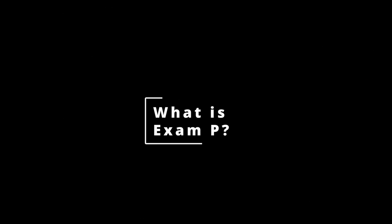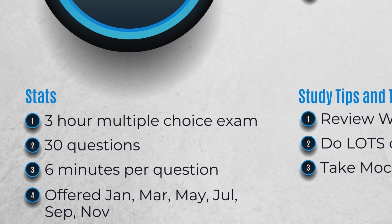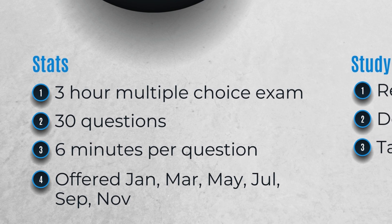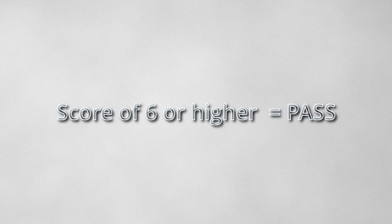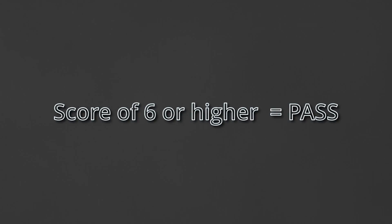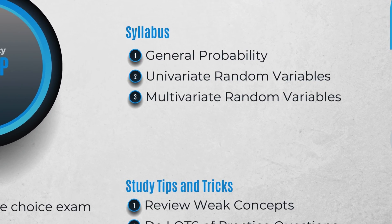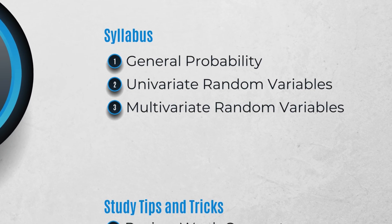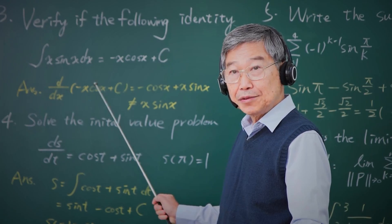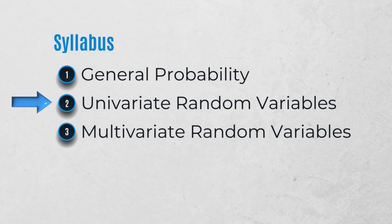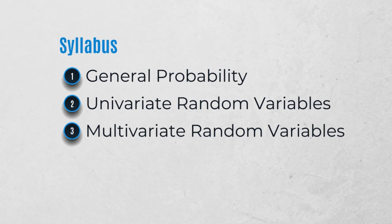Exam P is a three-hour, multiple-choice exam with 30 questions. The exam is graded on a scale from 0 to 10, with a score of 6 or higher resulting in a pass. Statistically, exam P is the first exam that most actuaries take. You can see that there are only three learning objectives. Compared to later exams, the concepts in these learning objectives are very straightforward. You do need to know calculus for exam P, but you're not going to need it until the second and third learning objectives. In this video, we're only covering learning objective 1, general probability. For a rundown of the entire syllabus, be sure to check out the rest of the series when it's released.